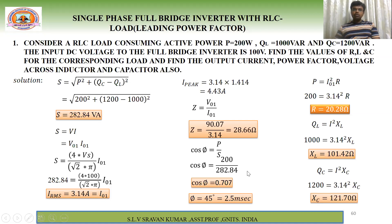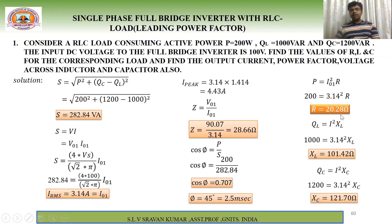To find resistance R: P = I²·R, so P = 200 W, I01 = 3.14 A. Solving gives R = 20.28 Ω. Remember this R value as it will be used in the simulation.